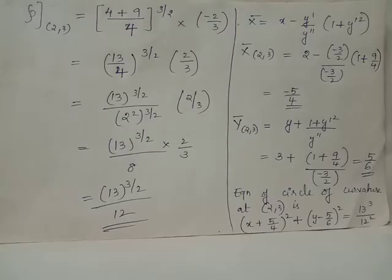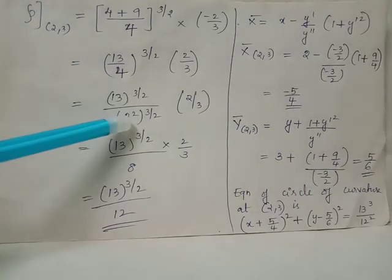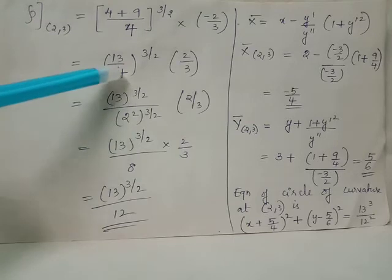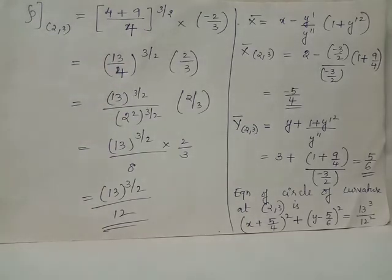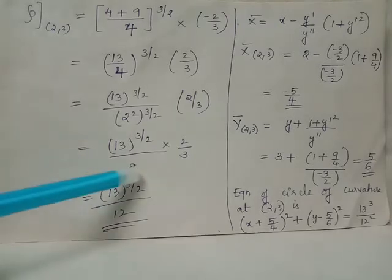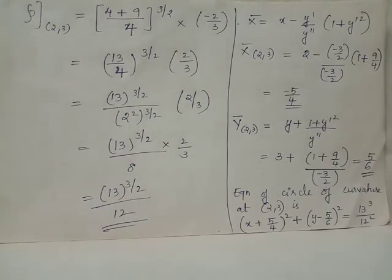You can neglect the negative sign since we are computing radius of curvature. When you rewrite 4 as 2 squared, you have 4 raised to 3 by 2 becoming (2 squared) whole raised to 3 by 2, we obtain 8. We have 2 by 8 equals 4 and in the denominator we obtain 12. Thus, the radius of curvature at point (2,3) is obtained as 13 raised to 3 by 2 divided by 12.